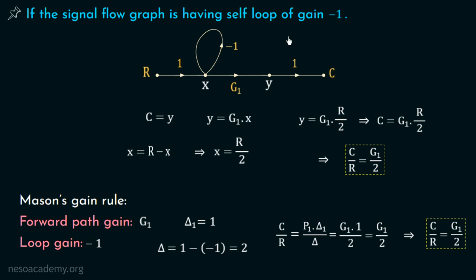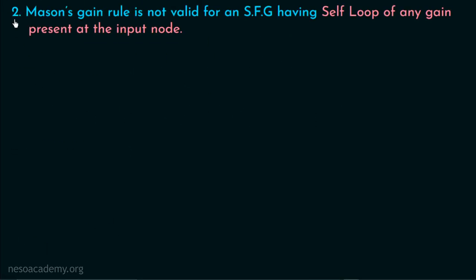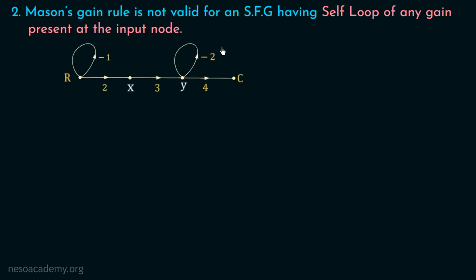We are now done with the first limitation. Moving to limitation number 2: Mason's gain rule is not valid for an SFG having a self-loop of any gain present at the input node. Consider a signal flow graph with two self-loops — the first with gain minus 1, and the second with gain minus 2 — where the second self-loop is present at the input node. We will compare results from algebraic equations and Mason's gain rule.